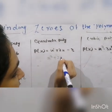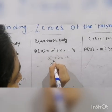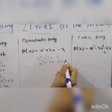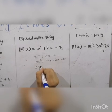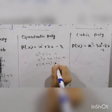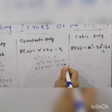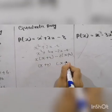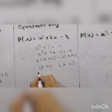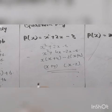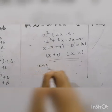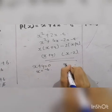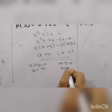For the quadratic polynomial, we factor it by splitting the middle term. We get the factors (x + 4) and (x − 2) as the two linear polynomials. Setting x + 4 = 0 gives x = −4. Setting x − 2 = 0 gives x = 2. So the zeros of the quadratic polynomial are −4 and 2.